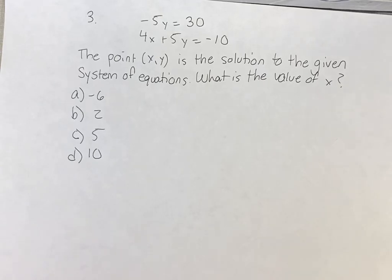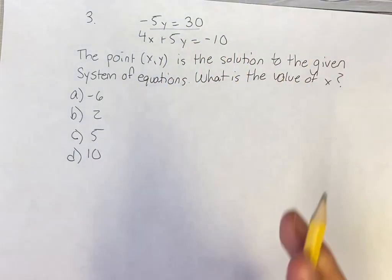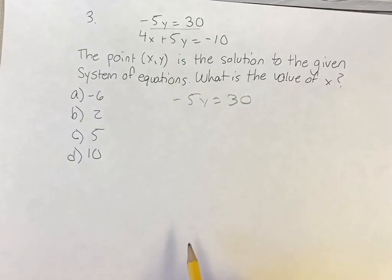So when we're finding the solution to a system of equations, you can usually do substitution or elimination. This one, we have this equation up here, negative 5y is equal to 30, and the only variable in this equation is y. So we can actually just solve for y, which is going to allow us to do substitution later.